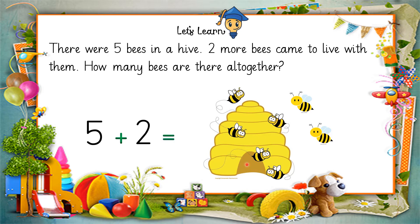Five bees plus two bees — how many bees are there altogether? Let's count together: one, two, three, four, five, six, seven. That's right — seven bees are there altogether.